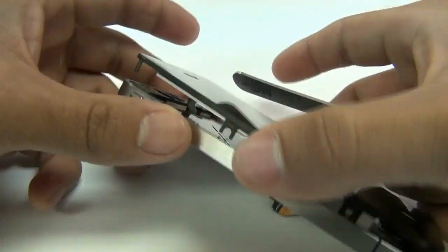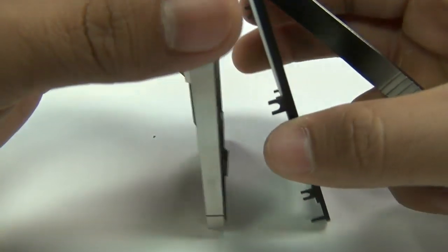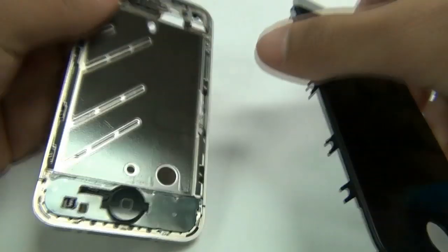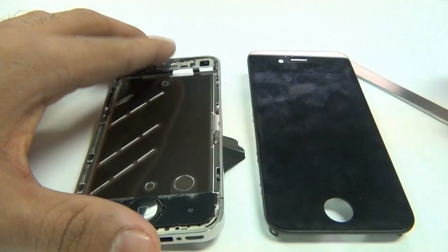Once the touchscreen glass digitizer and LCD display have been removed, you can install a brand new screen. Please view our other videos for the reassembly guide.